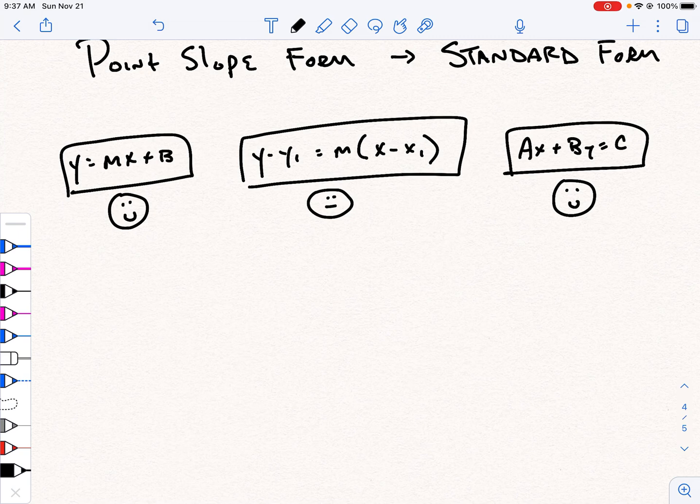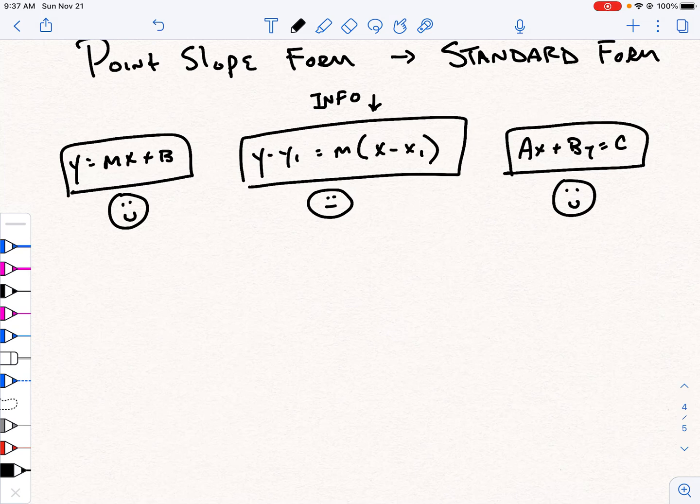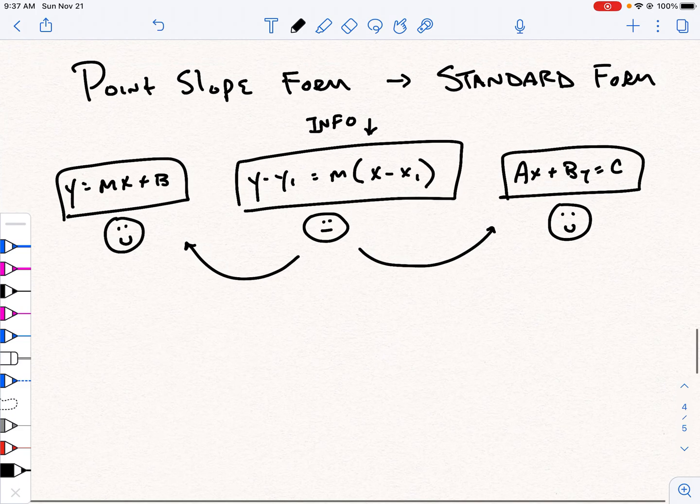So oftentimes, we would get some info, whatever the information is. We would put it into this equation, and then we would farm it out to one of these two types. So leaving it in point-slope form is normally kind of rare. It can be done, but we don't usually do that very often.